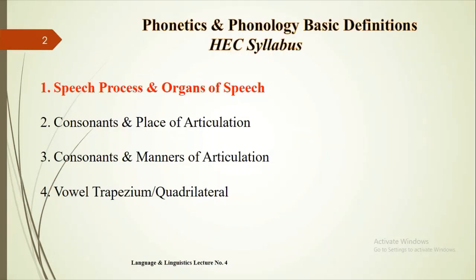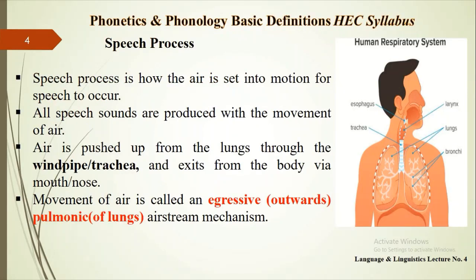This lecture will go through the process of the production of speech and the organs of speech. The process of speech is the mechanism or the system for the production of speech sounds. All sounds in English language are produced according to the egressive pulmonic air stream mechanism. It means sounds are articulated when air pushes up from the lungs to the windpipe or trachea and leaves the body from the mouth or nose. The production of speech sounds is the result of the movement of some active and passive articulators or speech organs.